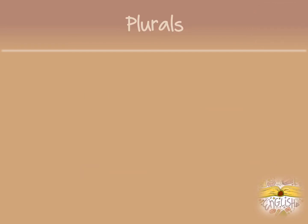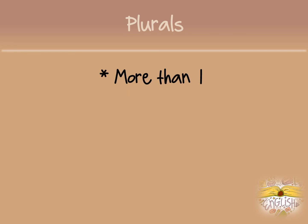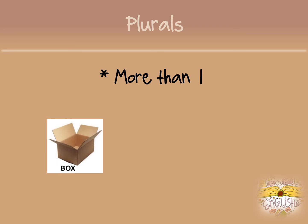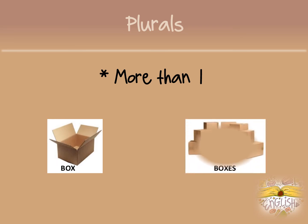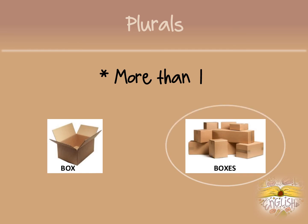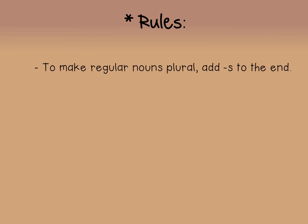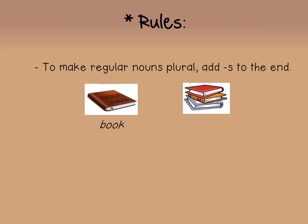Then we look at plurals. Plural is when something is more than one — one box is singular, more than one box is plural. To know how to change to plural, you have to follow some rules. The first rule: to make regular nouns plural, you add -s to the end. For example, 'book' changes to 'books.'